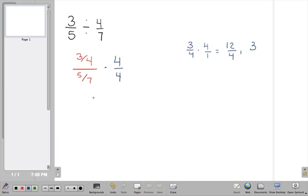So that is going to become 3 over, now I just need to figure out what is 5 over 7 times 4 over 1, which is going to be equal to 20 over 7.